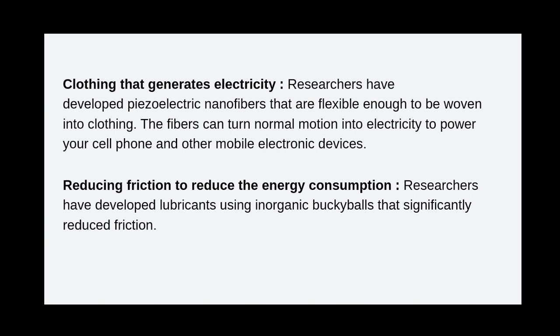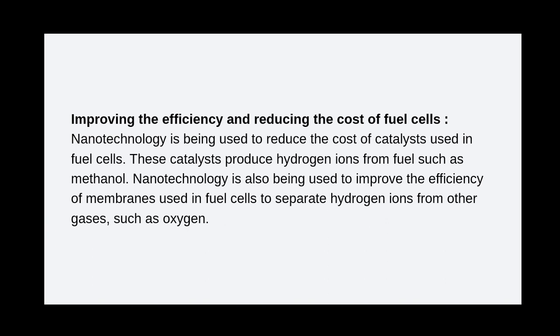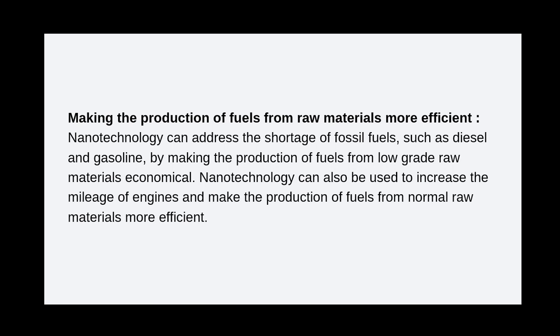Reducing friction to reduce energy consumption: researchers have developed lubricants using inorganic fullerenes that significantly reduce friction. Improving the efficiency and reducing the cost of fuel cells: nanotechnology is being used to reduce the cost of catalysts used in fuel cells. This catalyst produces hydrogen ions from fuels such as methanol. Nanotechnology is also being used to improve the efficiency of membranes used in fuel cells to separate hydrogen ions from other gases such as oxygen. Making the production of fuels from raw materials more efficient: nanotechnology can address the shortage of fossil fuels such as diesel and gasoline by making the production of fuels from low-grade raw materials more economical, and can also increase fuel mileage.